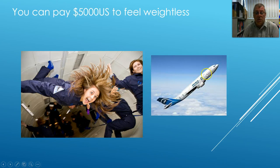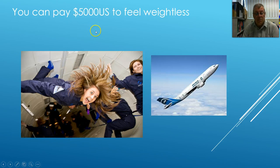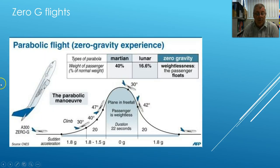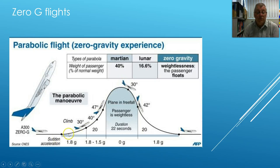On this zero-G plane there's a big cavity in it without any seats, and it goes on a parabolic flight where you experience weightlessness. You can pay around $5,000 US to experience that in short periods. If you're a famous physicist you get to go up there for free and they take lots of photos of you. The weightlessness lasts for about 22 seconds during the parabolic arc.